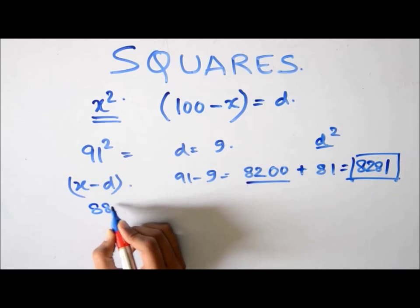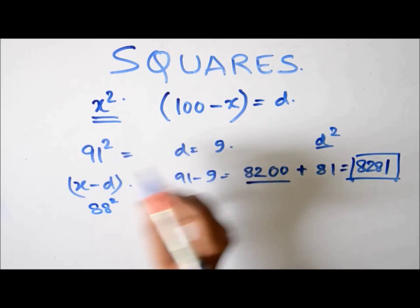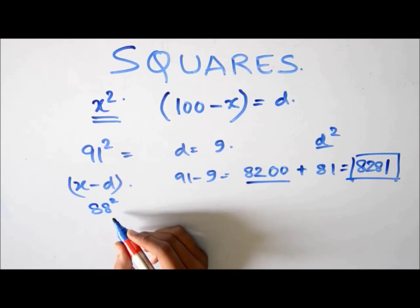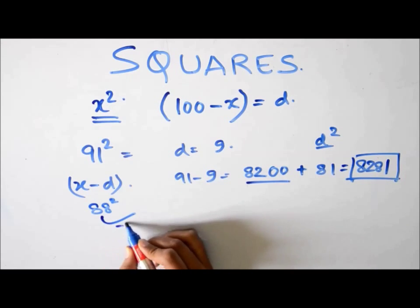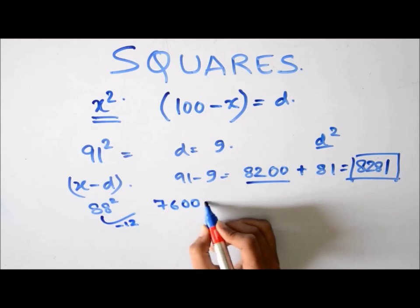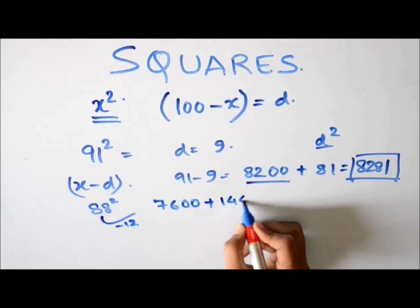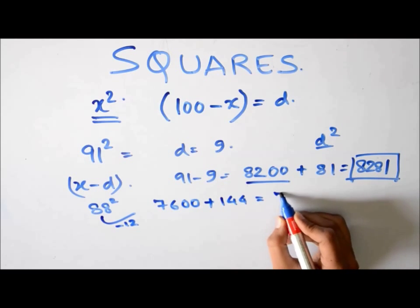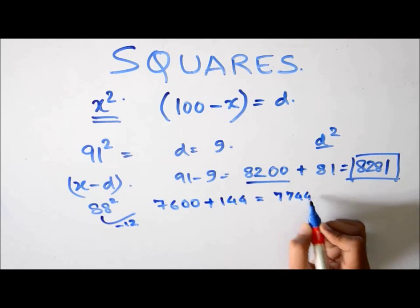Suppose it's 88 square. Now let's do it directly. It's 12 less than 100. So you subtract 12. What you get is 76. 7600 plus 12 square is 144. This will give you 7744. Simple.